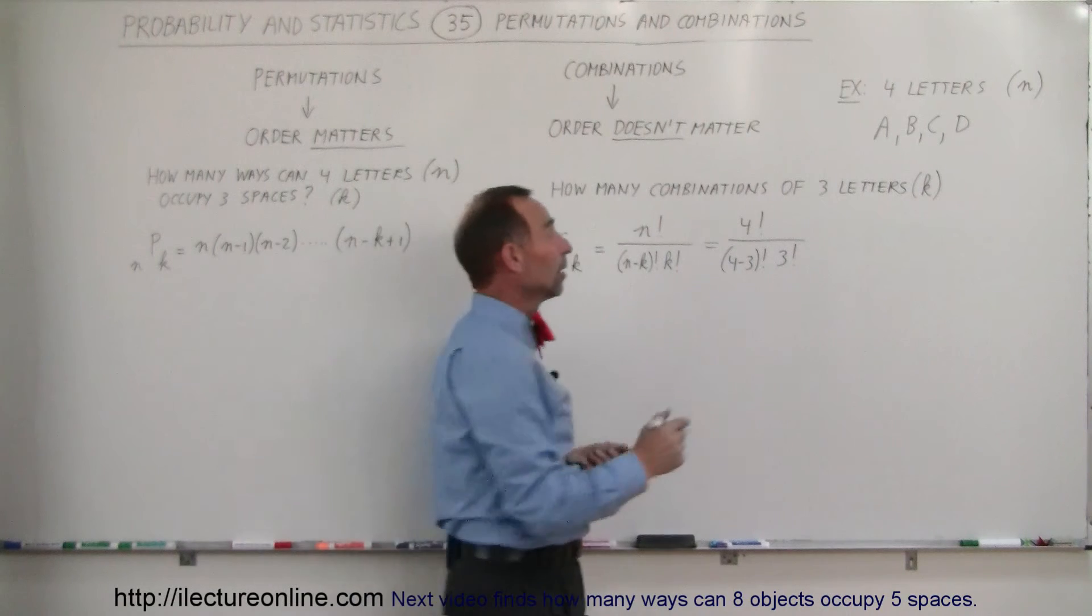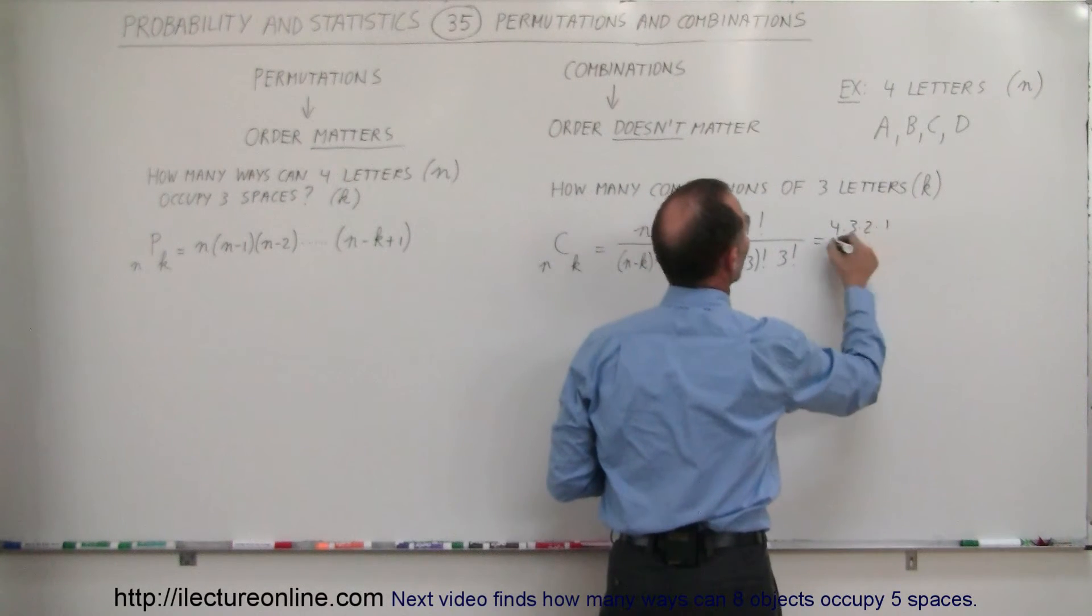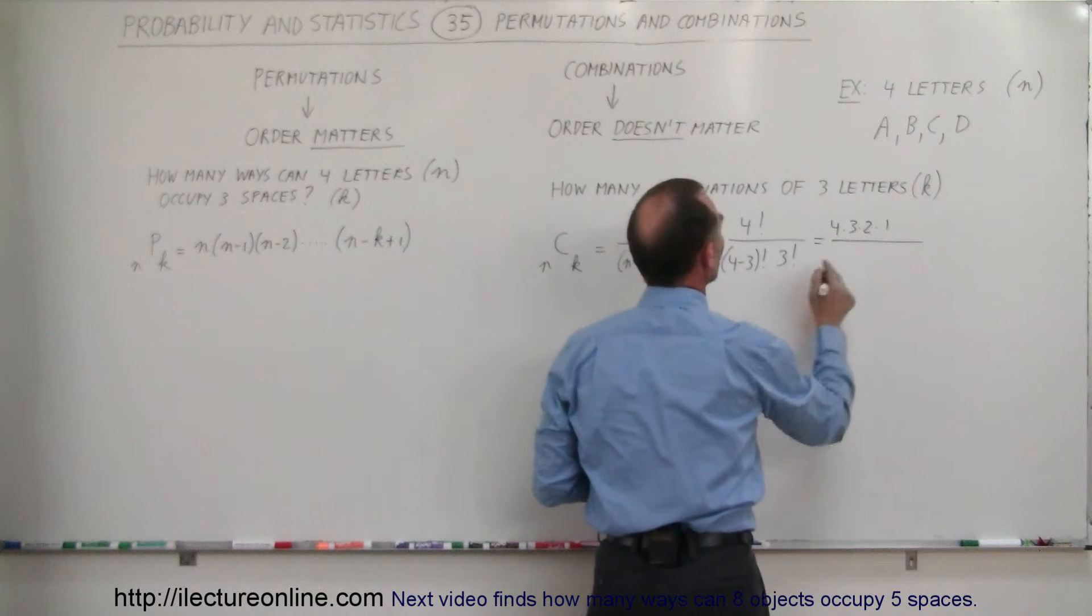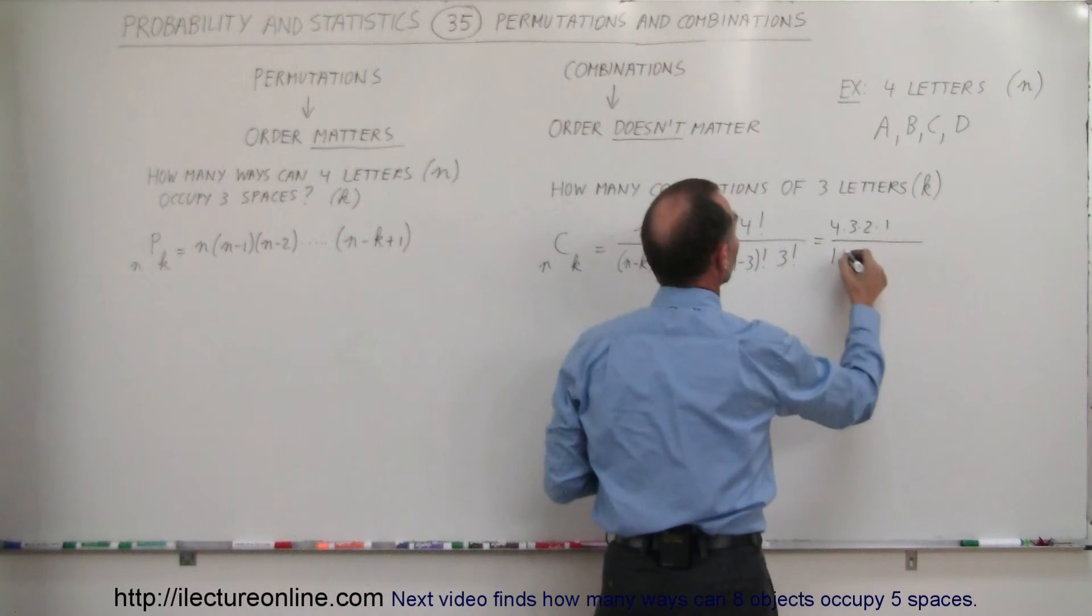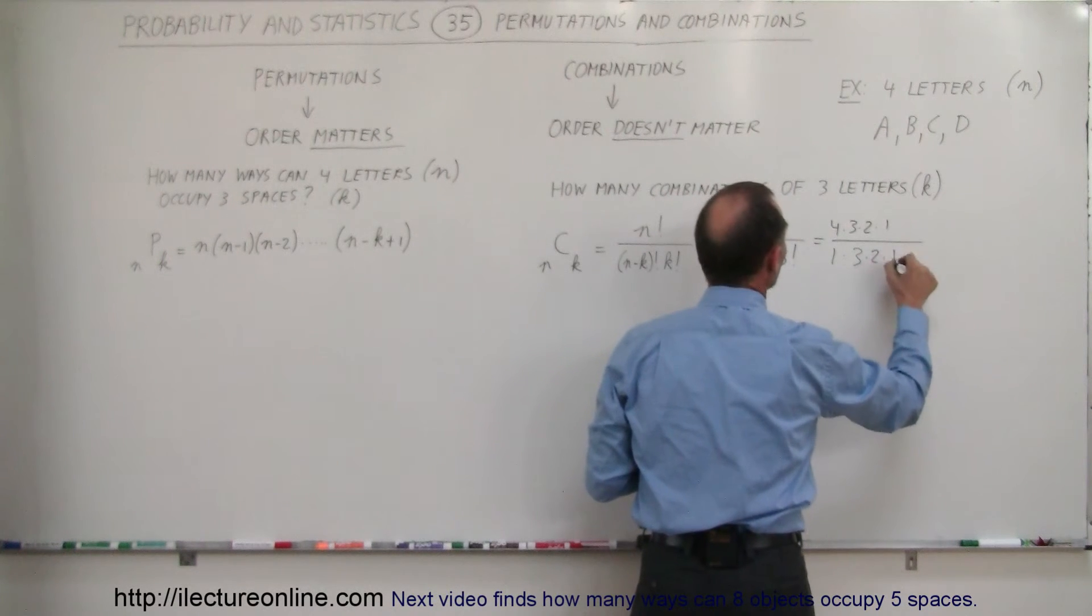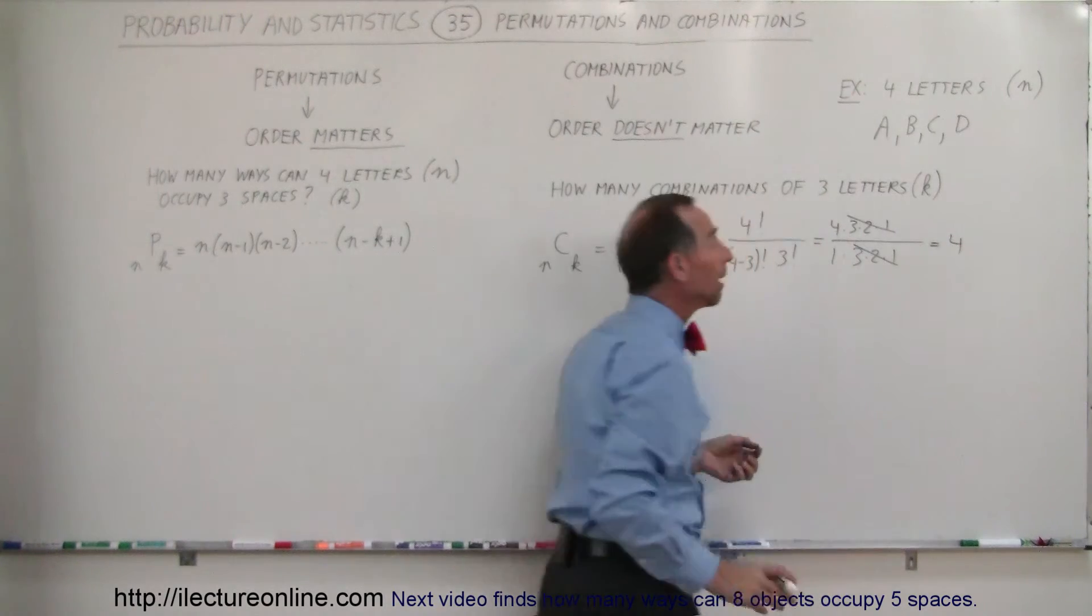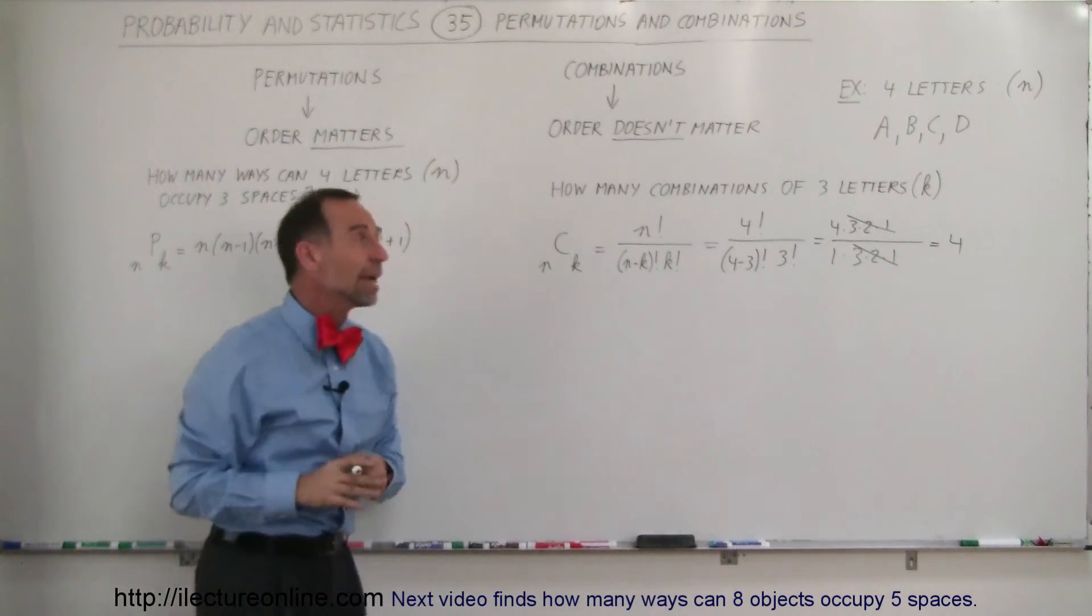Now we simplify that, so four factorial is four times three times two times one, divided by four minus three, which is one factorial, which is simply one, times three factorial, which would be three times two times one. Notice that this cancels out, so the answer is four, that means there are four combinations you can make.